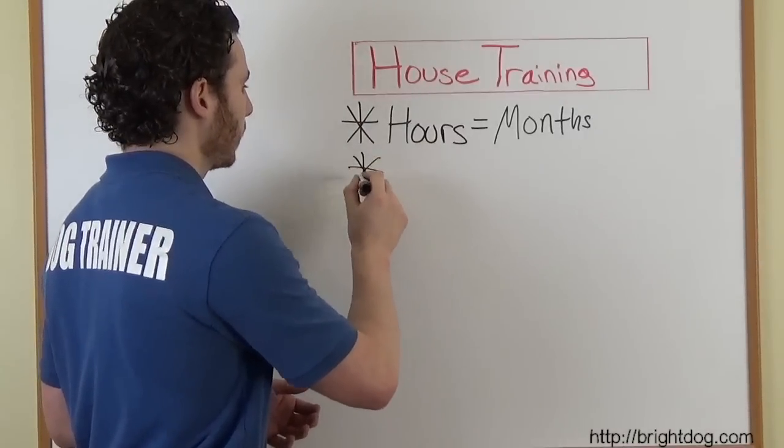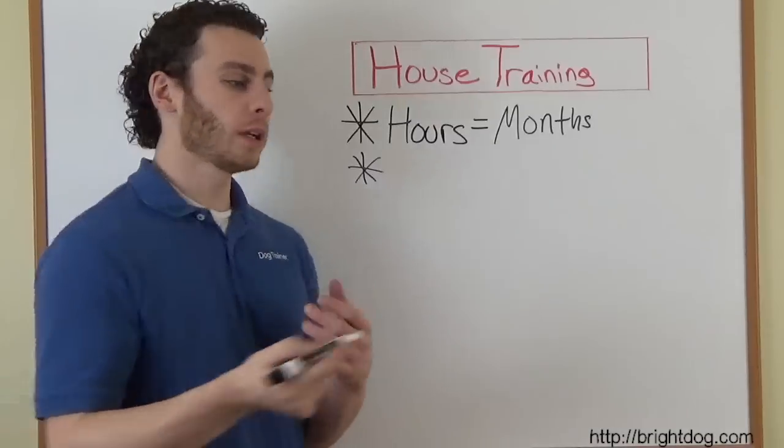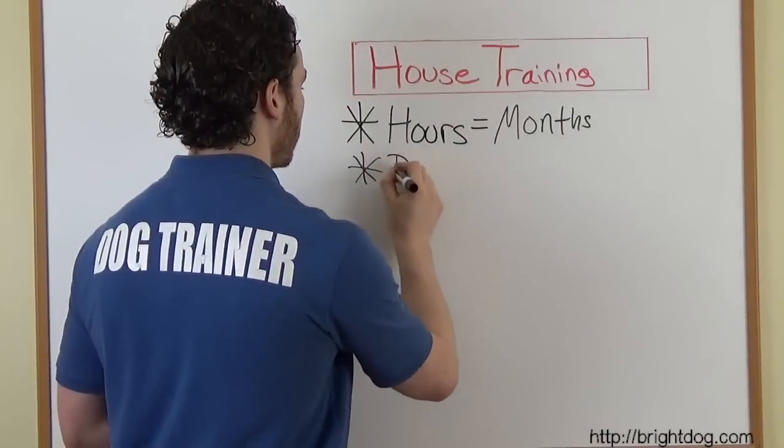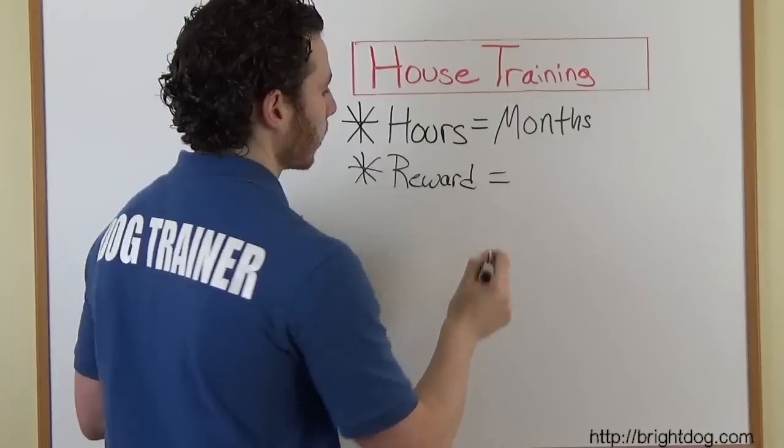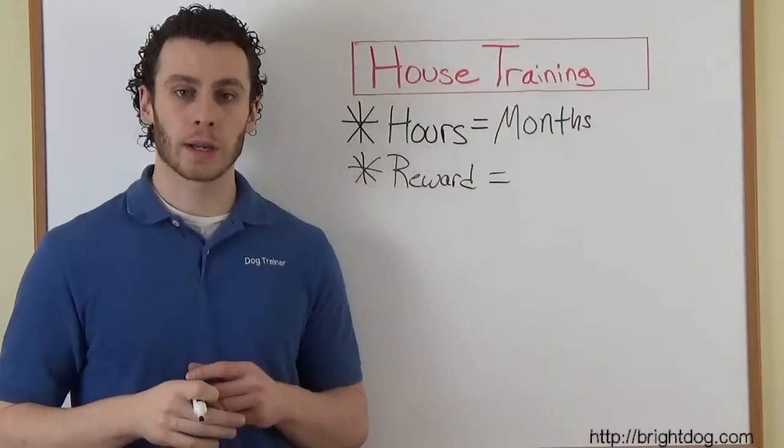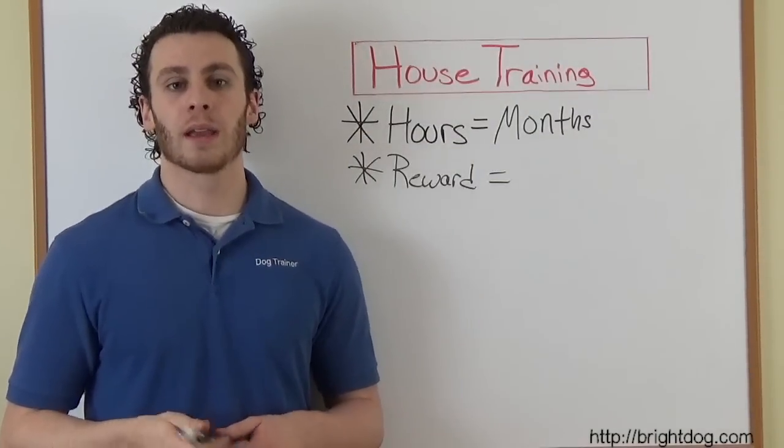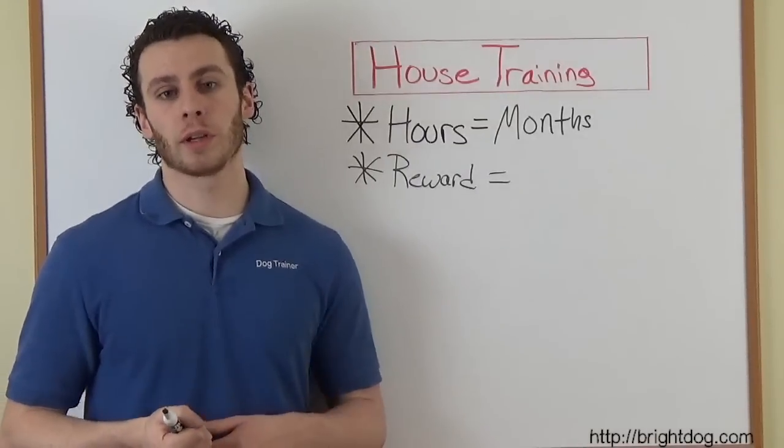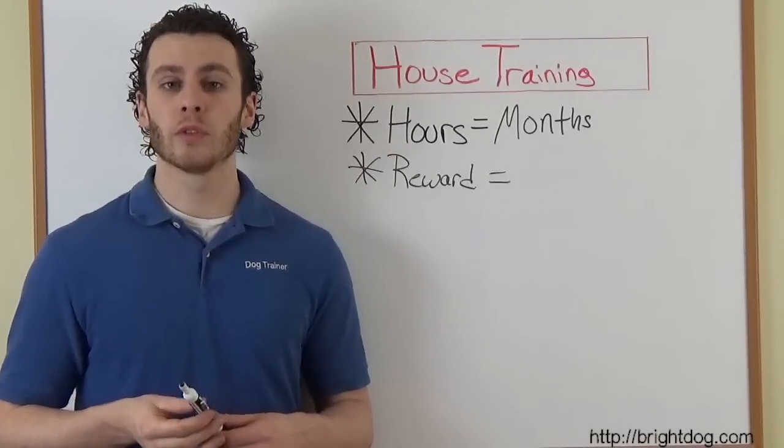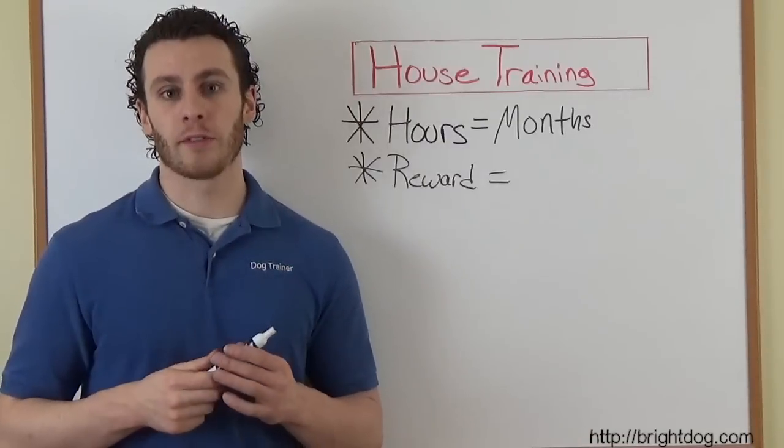The way that we handle going outside is important. We want to make sure we reward the behavior of going to the bathroom outside. Every single time we take the puppy outside, we need to have treats with us. Very high reward treats that we normally don't give them. Usually I like to use people food: chicken, cheese, hot dogs, something of very high value.